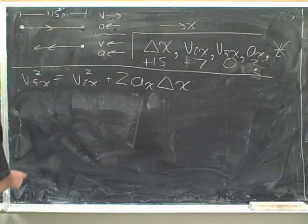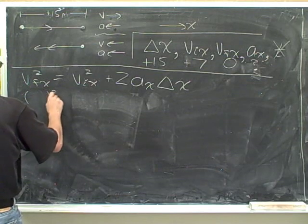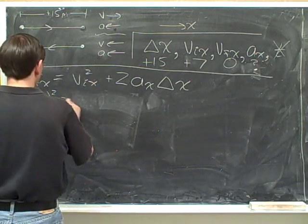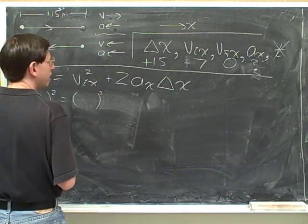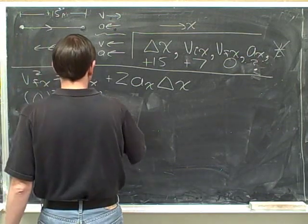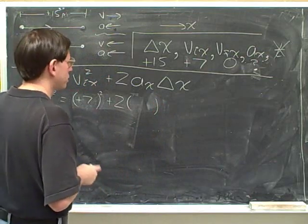Now we start plugging in. In order to plug in the velocity, we start by putting in our parentheses. Although in this case, the final velocity is 0. Before we plug this in, again we put in parentheses to enclose the sign. Now the initial is plus 7. Don't forget to write the plus.